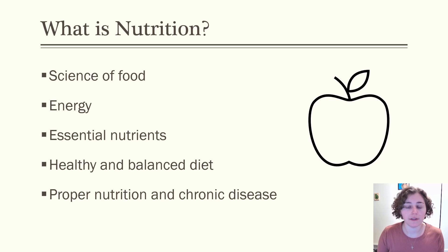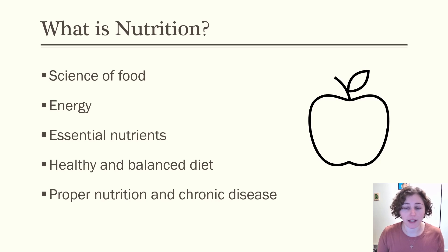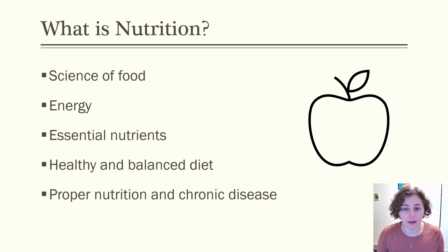The foods we consume provide us with essential nutrients which are needed to fuel, build, and maintain our body cells. Eating a healthy and balanced diet provides us with energy and nutrients. Proper nutrition supports normal growth and development and allows us to reduce the risk of chronic diseases. Many health conditions like diabetes and cardiovascular disease are directly affected by the foods we consume.